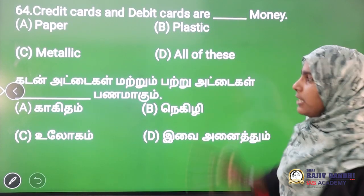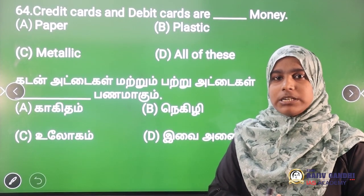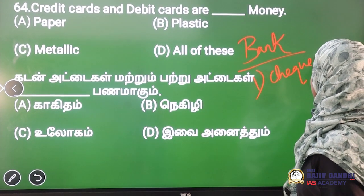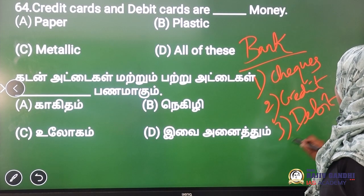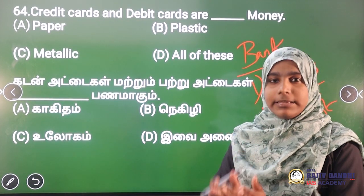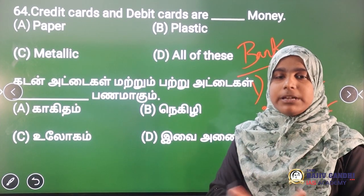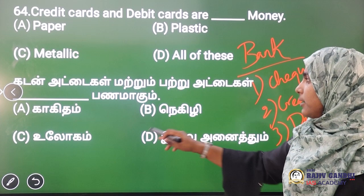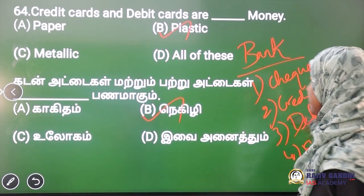Credit cards and debit cards are what type of money? If we look at the concept of bank money or banking money, it includes checks, credit cards, and debit cards. In banking, we use coins and notes as well, but credit cards and debit cards are classified as plastic money — not metallic or paper money. Next question.